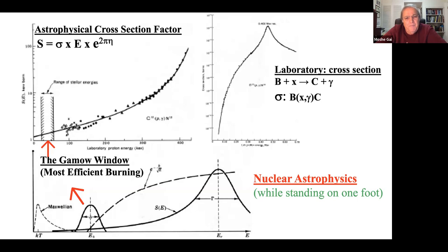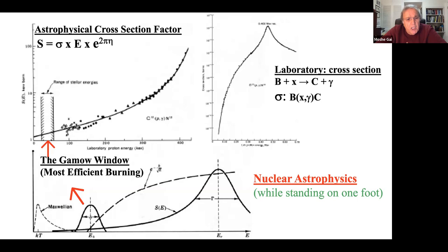We measure in a laboratory and need to extrapolate to stellar conditions. The cross section dives exponentially, and we might have a resonance. The velocities in the star follow a Maxwellian distribution. The convolution of the velocity distribution with the cross section gives us a window - we call it the Gamow window - the most efficient energy for stellar burning. That's all you need to know about nuclear astrophysics.